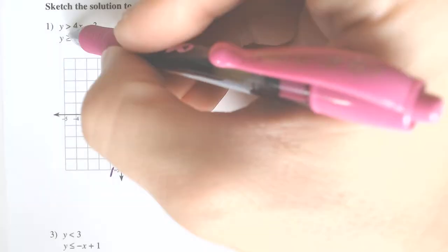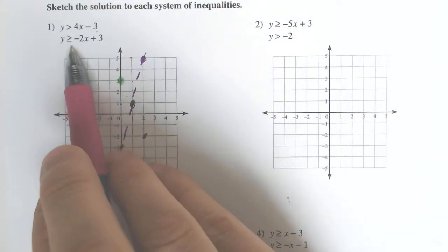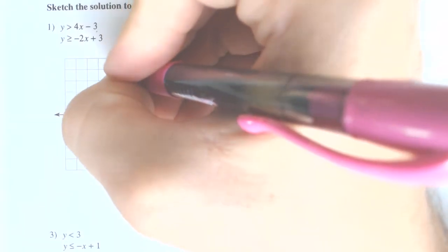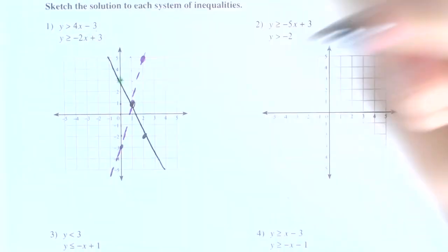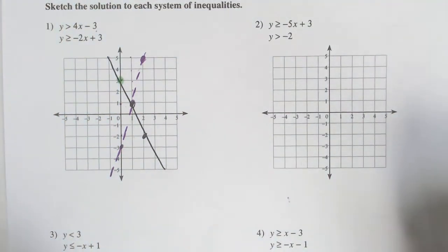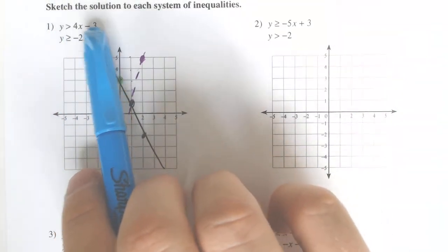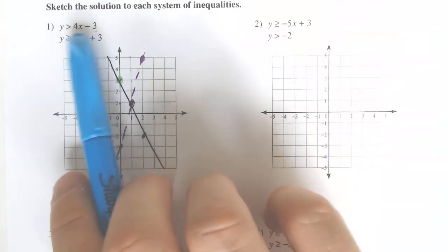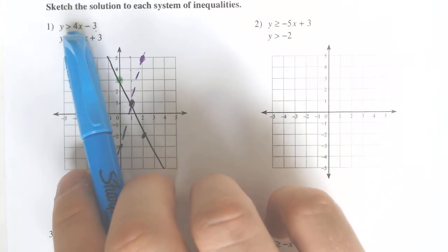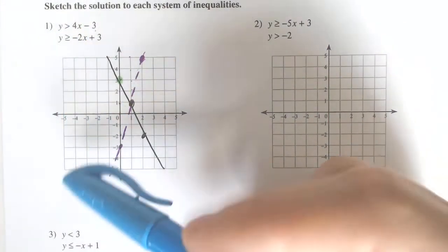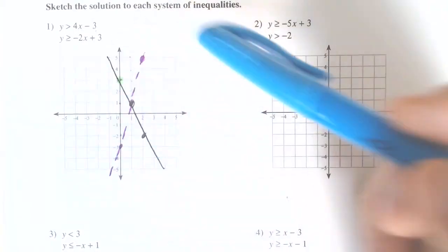And then this one, because it has that equal to symbol underneath it, we are going to be able to fill it in with a solid line, not just a dotted line. And we are going to be able to shade from this point forward. We are going to take the first thing we graphed — that dashed line — and it says greater than. If it says greater than, you have to shade up.